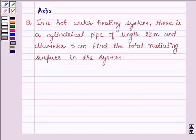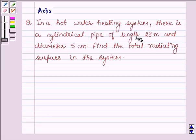Hi and welcome to the session. The question says, In a hot water heating system, there is a cylindrical pipe of length 28 meters and diameter 5 centimeters. Find the total radiating surface in the system.